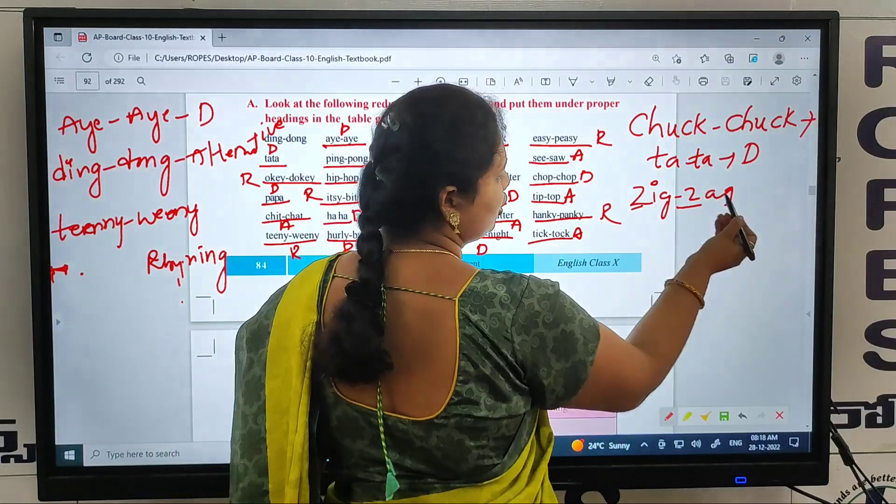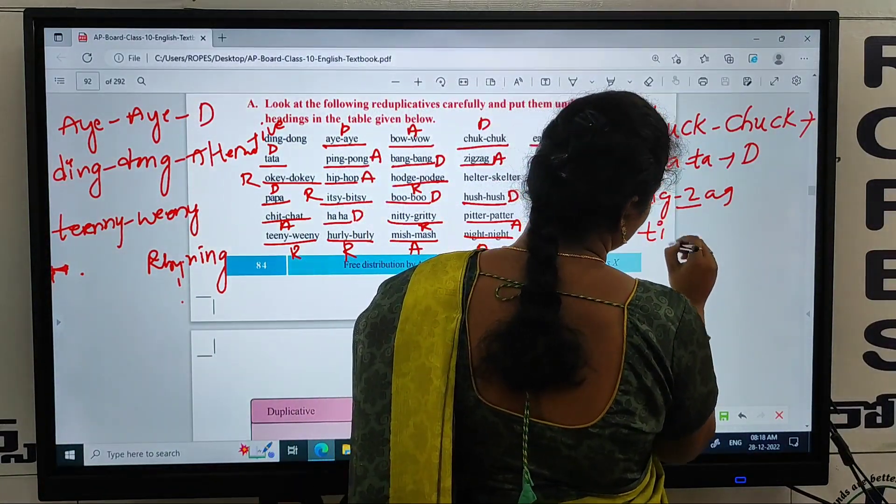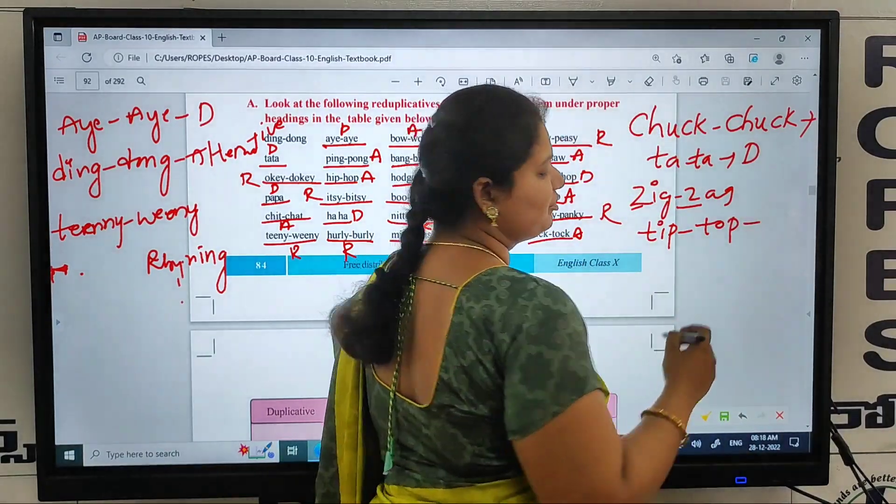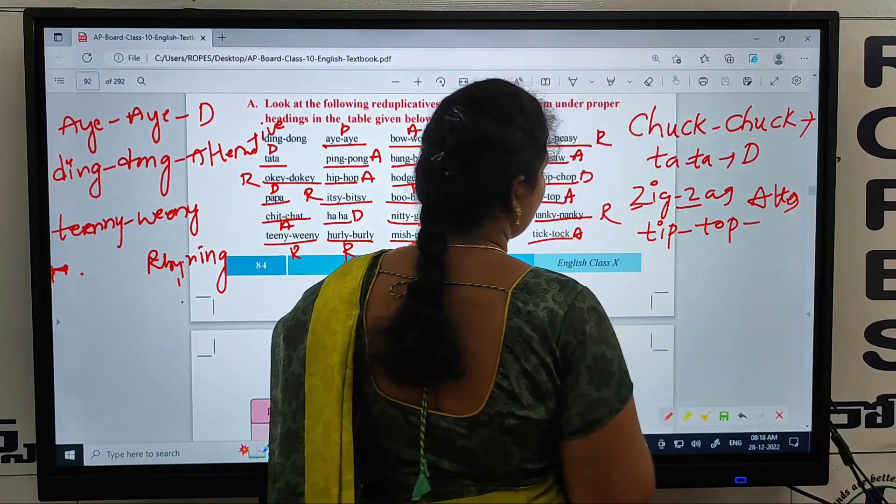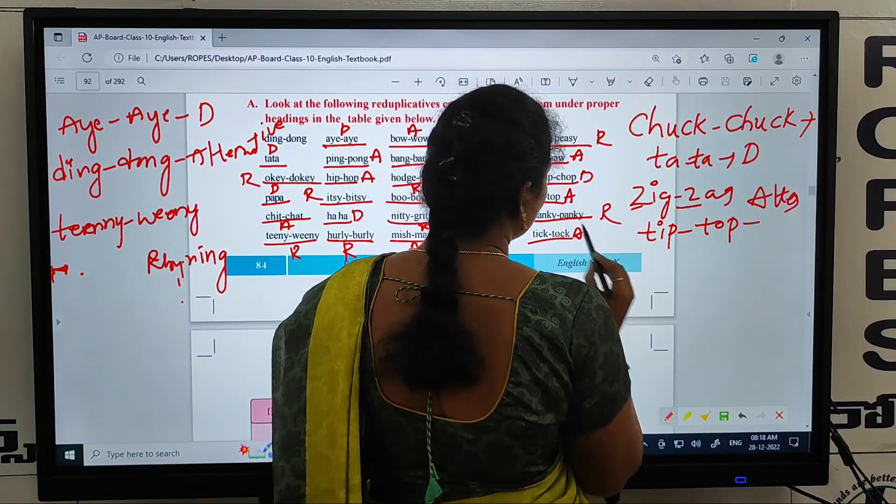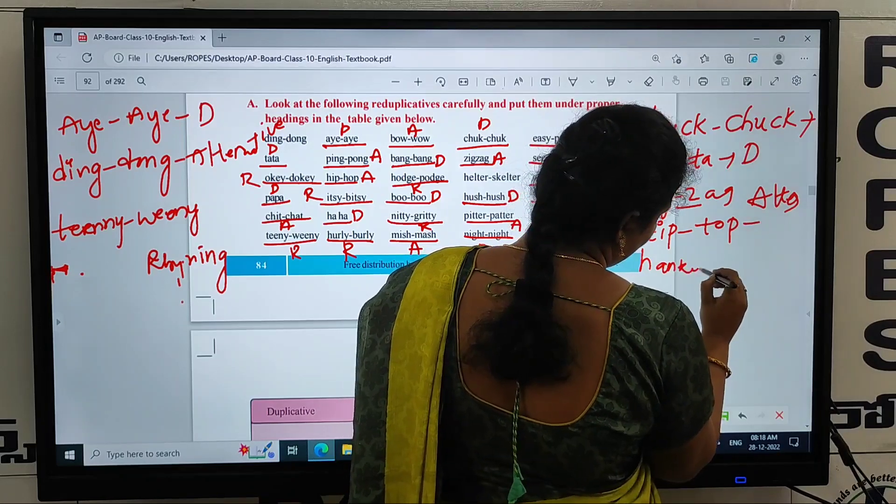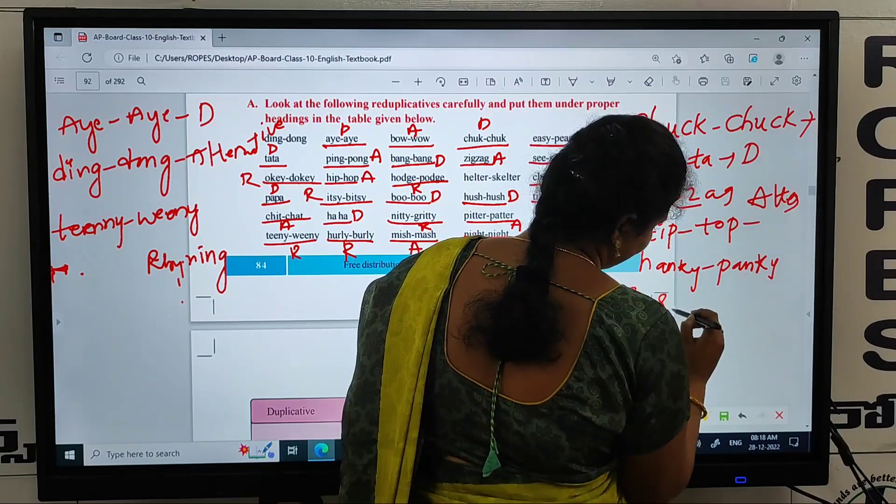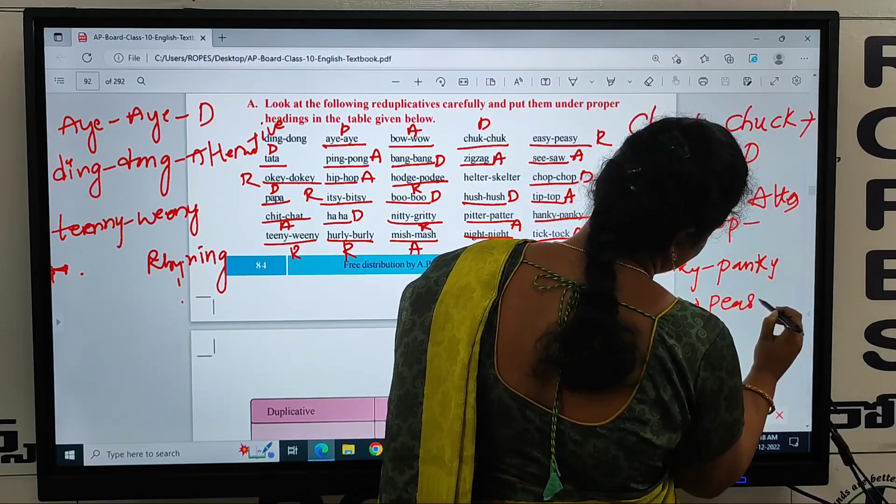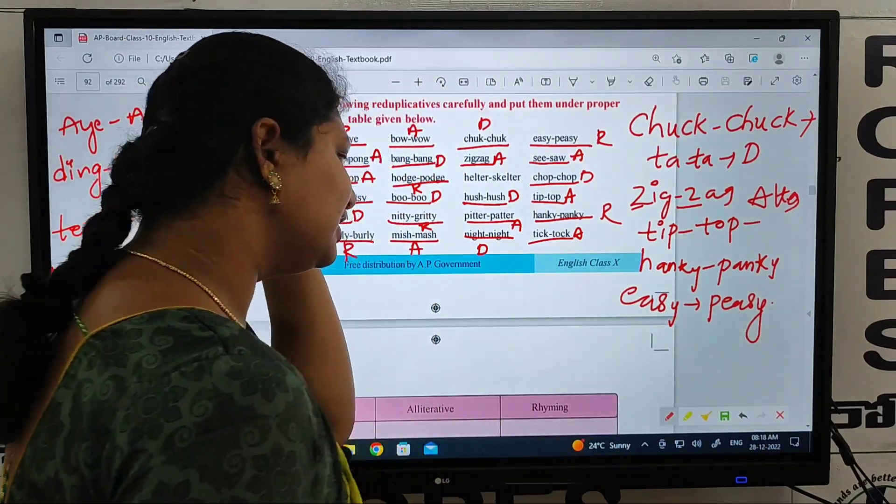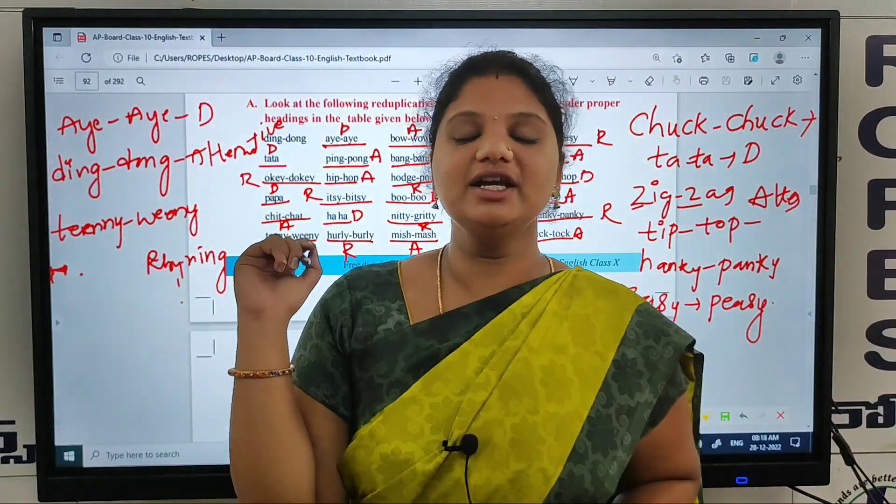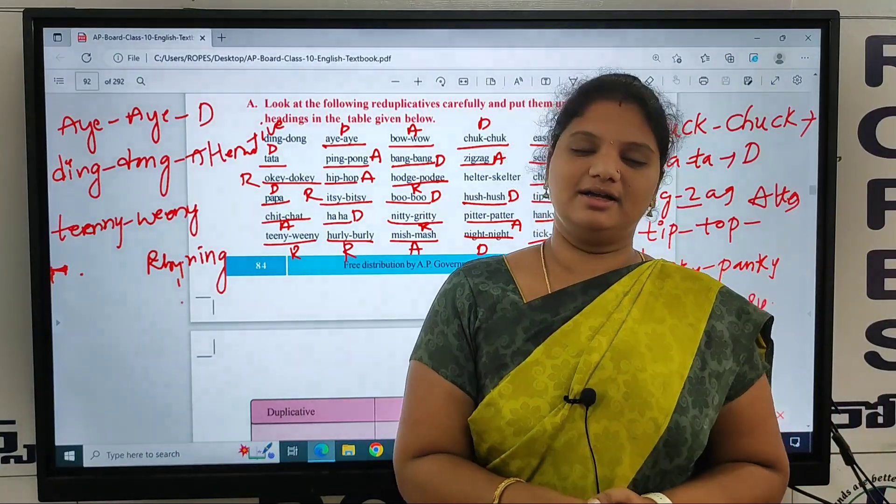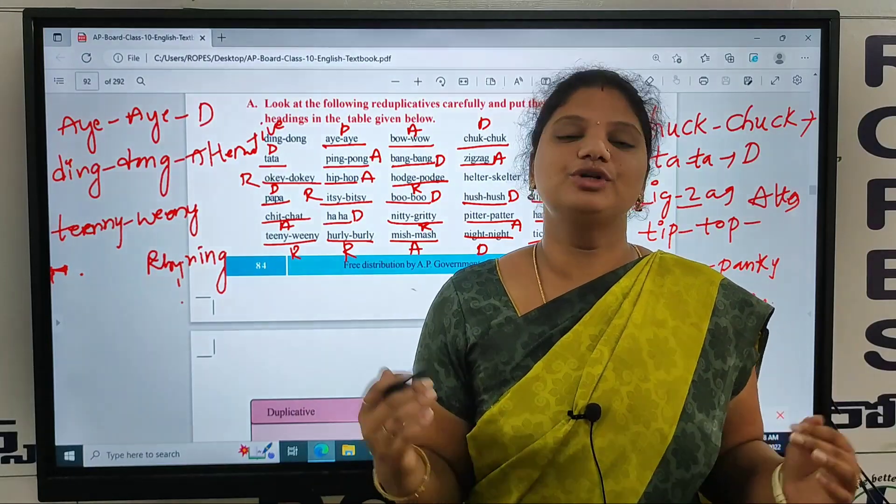This word is zig-zag. Tip-top. This word is almost duplicative. This word is alternative word. Now the rhyming word is what? Suppose, hanky-panky. Hanky and panky. This word is easy-peasy. Easy and peasy. So, this word will be a rhyming word. This will be two marks. This will be in the grammar part. If you have any doubt, please comment in the comment section. Thank you, thank you one and all.